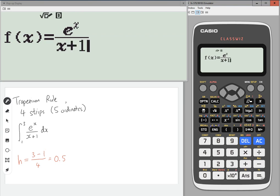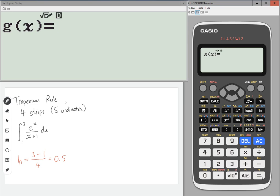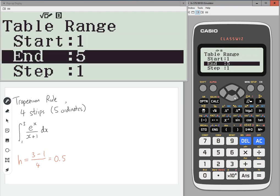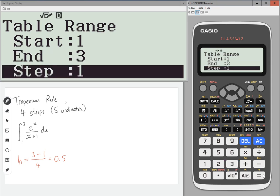We're not going to need a g of x, we don't need a secondary function, so press equals again. For the start we want the lower limit which is one, the upper limit for the end is three, and we want to go up in 0.5s.